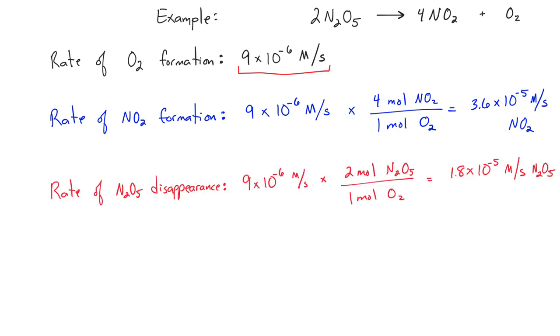Similarly, we can calculate the rate of N2O5 disappearance. For that, we take our rate of O2 formation and multiply by 2 moles N2O5 over 1 mole O2. The answer we get is 1.8 × 10⁻⁵ molar per second of N2O5.